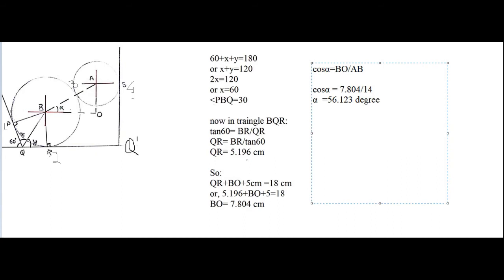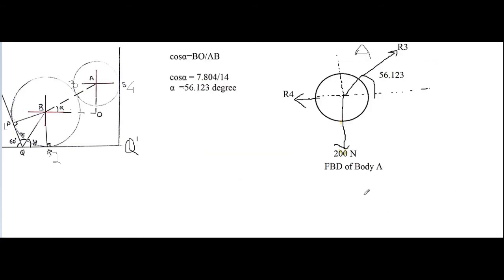In triangle BOQ, using the cosine formula, we find angle alpha: cos(alpha) = BO / AB. Solving this, alpha comes out to be 56.123 degrees.